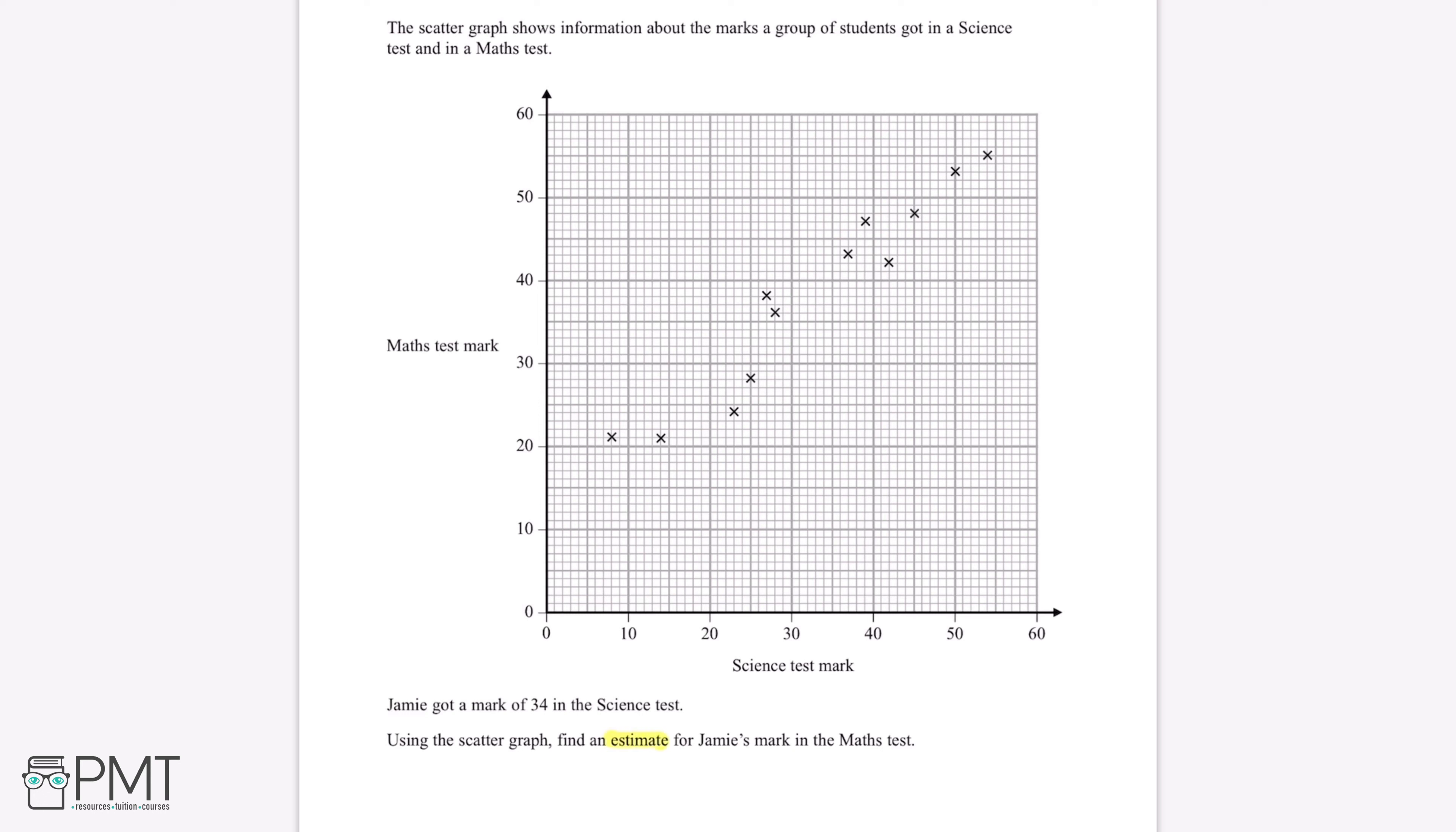So in order to find an estimate for Jamie's mark in the maths test, the first thing we're going to want to do is draw a line of best fit. And our line of best fit will be a straight line.